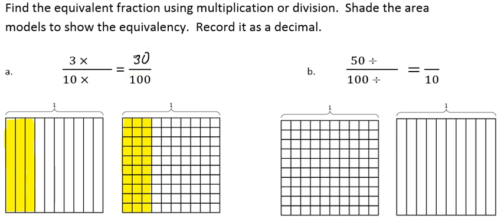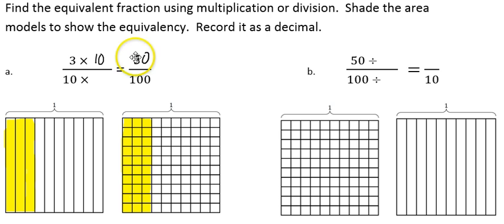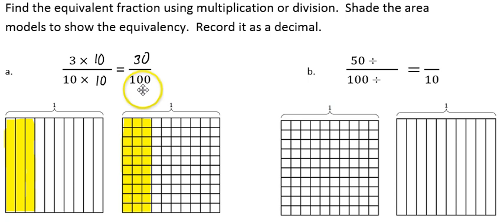Each little square in this model is 1 hundredth. I have 3 columns, each has 10, so that gives me my 30 hundredths. In order to get from 3 tenths to 30 hundredths, what we did is we took each tenth and multiplied it by 10 — we broke each tenth into 10 pieces. We started off with 10 tenths that made the whole; if we multiply that by 10, that gives us the 100 pieces that make the whole. This shows me that 3 tenths is equivalent to 30 hundredths, and we can prove that mathematically by multiplying both the numerator and the denominator by 10.